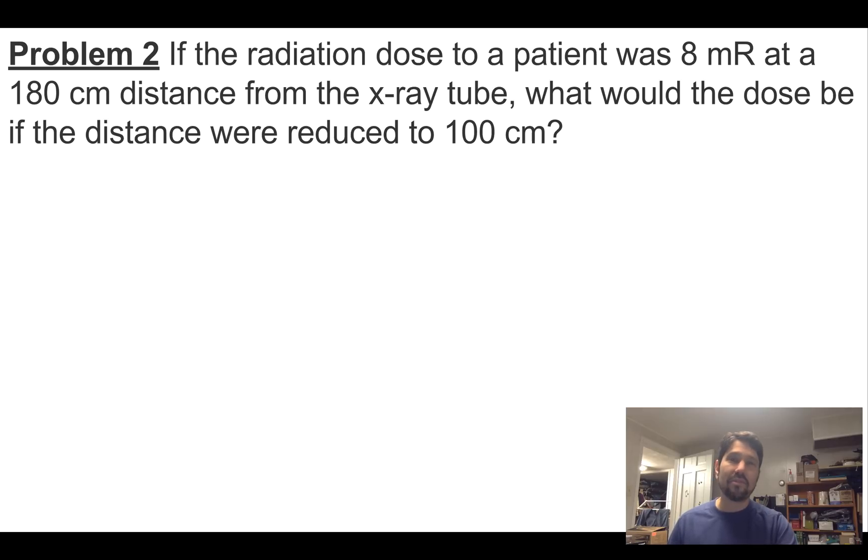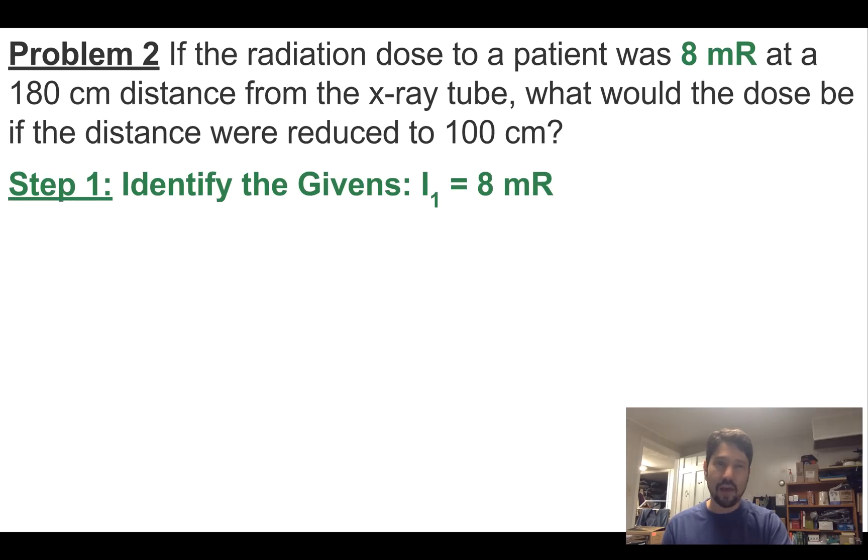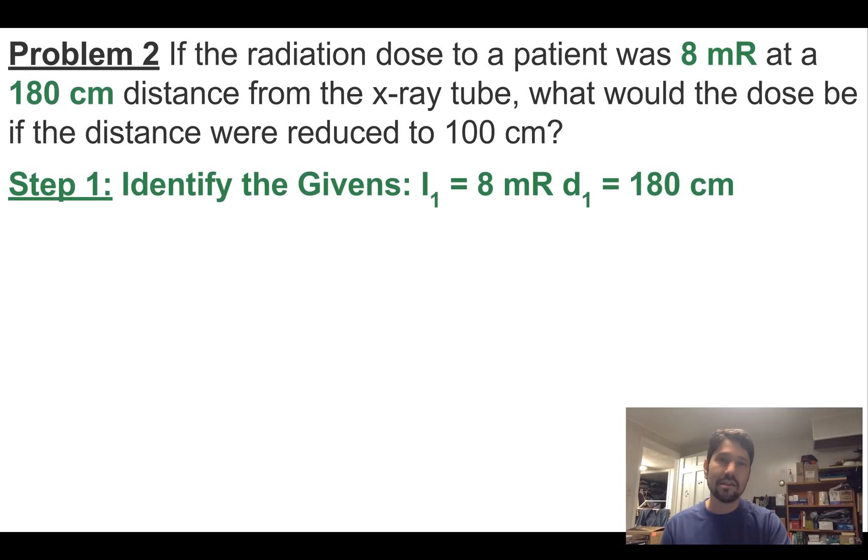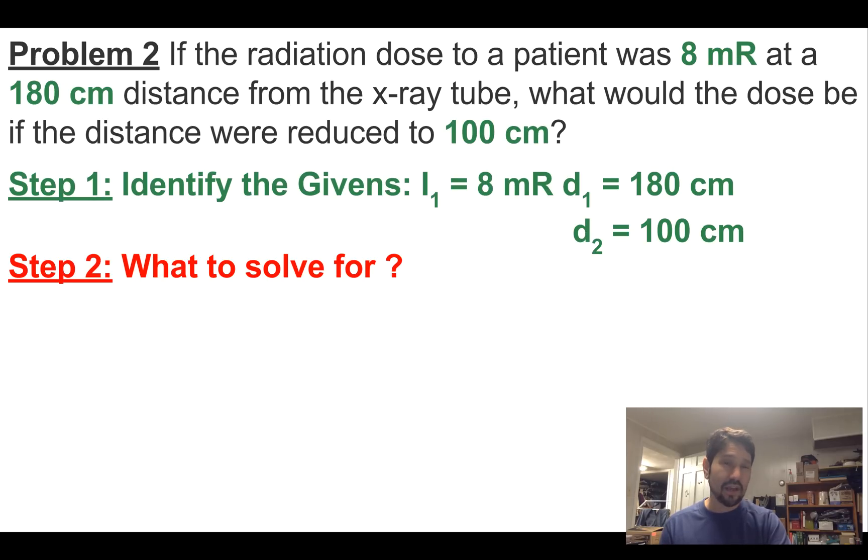All right, here's our second problem. If the radiation dose to a patient was eight millirads at 180 centimeters distance from the tube, what would the dose be if the distance were reduced to 100 centimeters? Again, let's find our givens. I1 is eight millirads, D1 is 180 centimeters, and D2 is 100 centimeters. But what are we solving for? We're solving for intensity two.